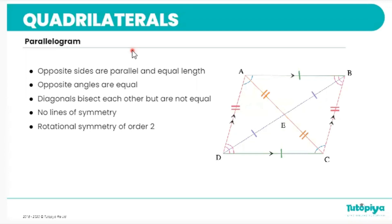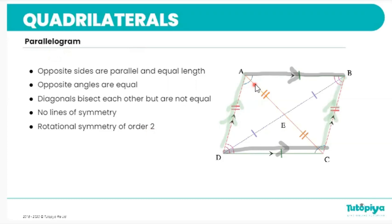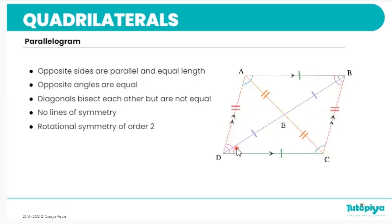The next quadrilateral is a parallelogram. Parallelograms have opposite sides that are parallel and equal in length. Opposite angles are also equal, but unlike a rectangle, these angles are not 90 degrees — angle A equals angle C, and angle B equals angle D. The diagonals of a parallelogram bisect each other. Parallelograms have no lines of symmetry, but they do have rotational symmetry of order two.